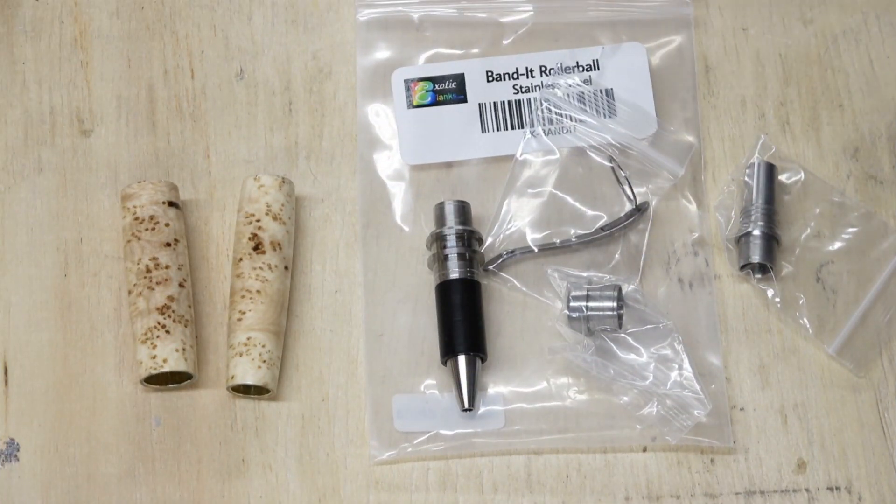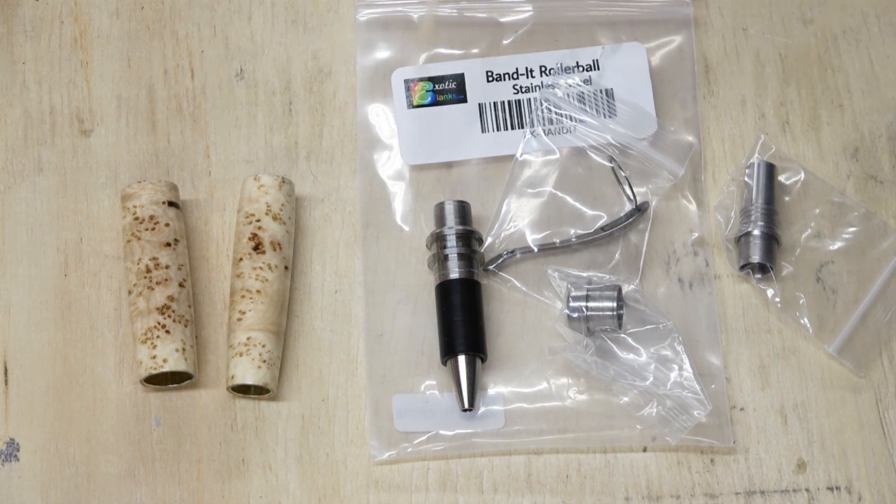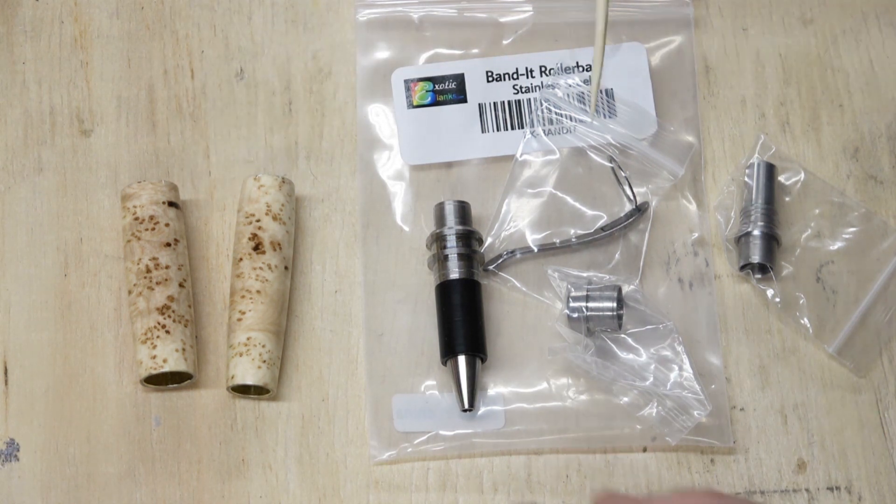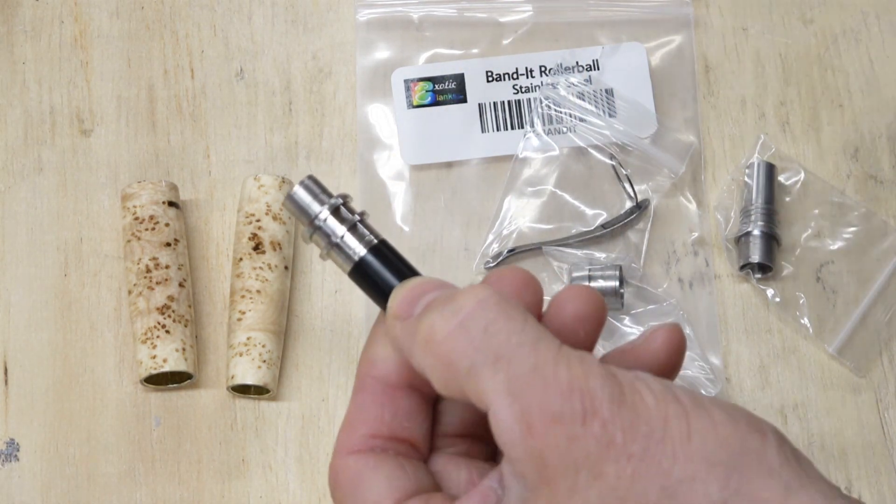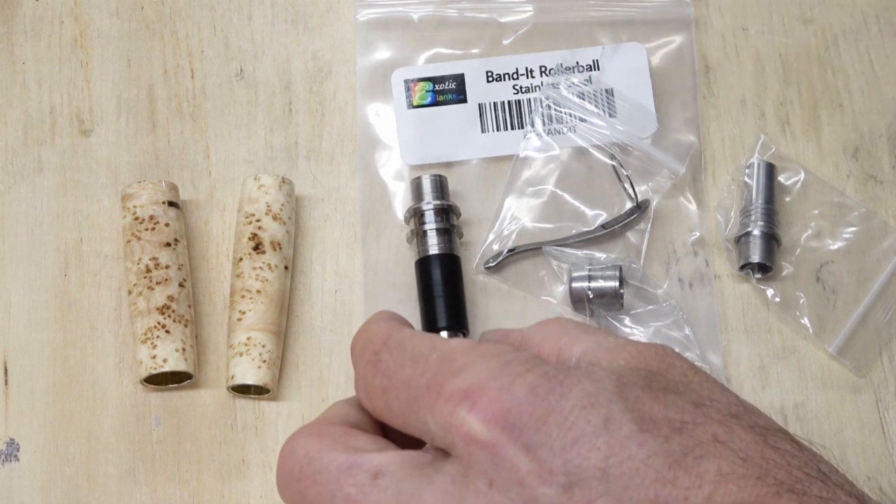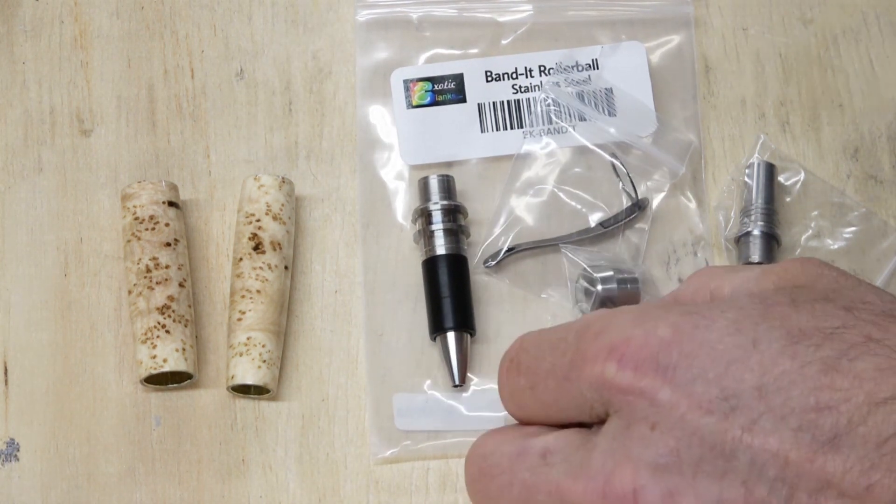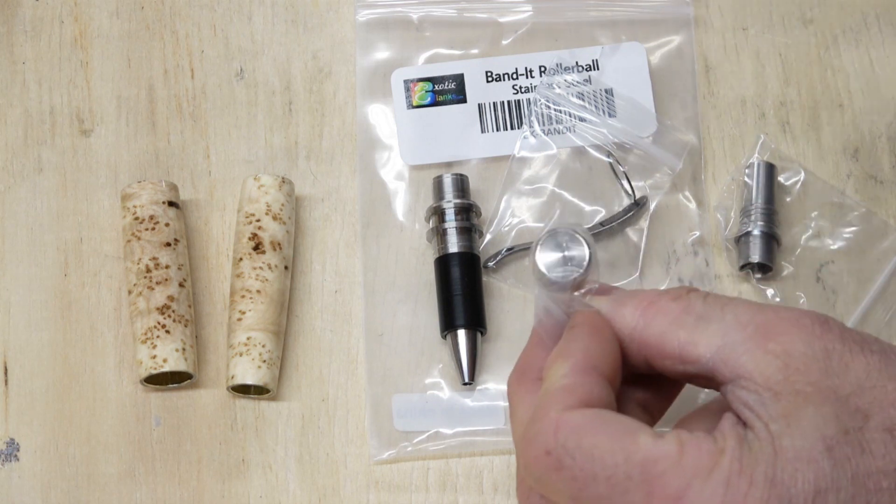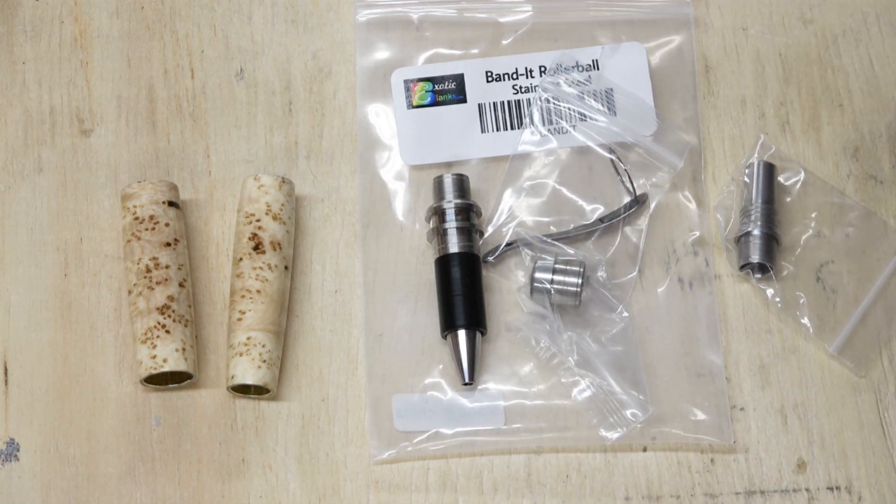Alright, so here we have the Bandit rollerball, and I'm a huge fan of this pen set because it offers so much opportunity for customization. Now I've already got some black ash burl turned down, and what I want to do now is utilize the channel and the center band to build up something to complement this blank. I'm also going to utilize the top center cap here and show you how I would make a custom finial.